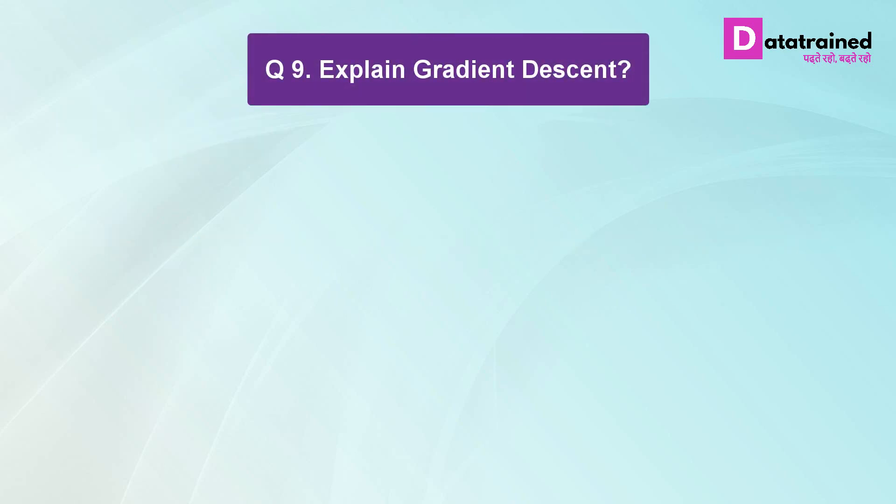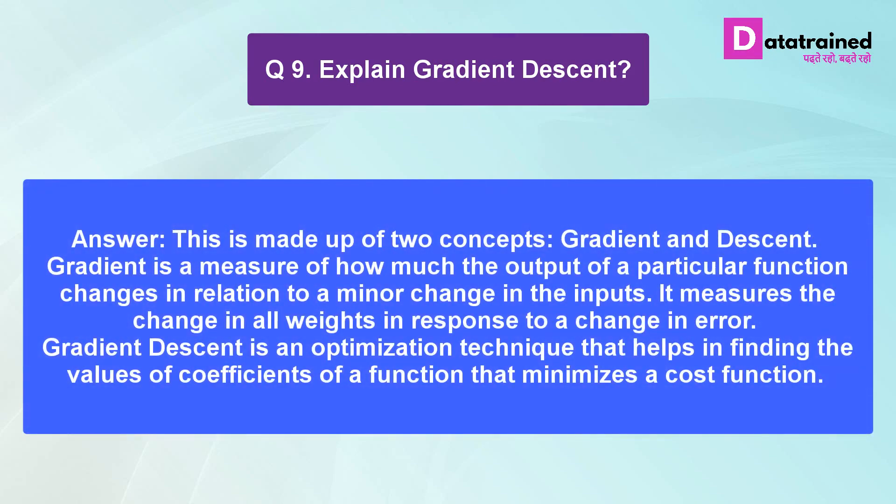Explain gradient descent. This is made up of two concepts: gradient and descent. Gradient is a measure of how much the output of a particular function changes in relation to a minor change in the inputs. It measures the changes in all weights in response to a change in error. Gradient descent is an optimization technique that helps in finding the values of coefficients of a function that minimizes a cost function.